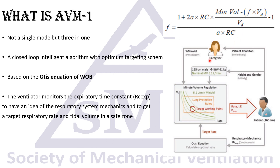The clinician enters the gender and height to get an ideal body weight, and also enters the percent target minute ventilation. Each 100% equals 100 milliliters per kilogram of ideal body weight per minute. So if the ideal body weight is 61 kg and you dial 100%, it will be 6.1 liters per minute. The ventilator then adjusts the respiratory rate and tidal volume to achieve that ideal minute ventilation, typically using a ratio of 1 to 1.